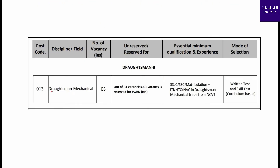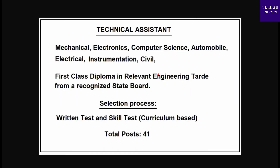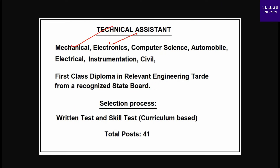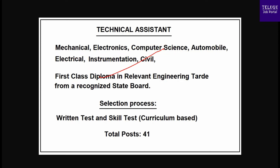In the 11th class, there are 3 categories. This is ITI plus relevant training. In the 11th class, it is a written test plus skill test. The technical streams include Mechanical, Electronics, Computer Science, Automobile, Electrical, Instrumentation, and Civil. You need to complete a Diploma, first class Diploma, to be selected through written test plus skill test.